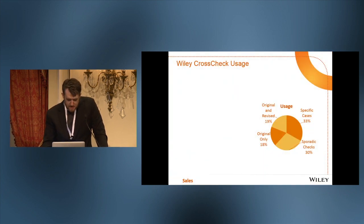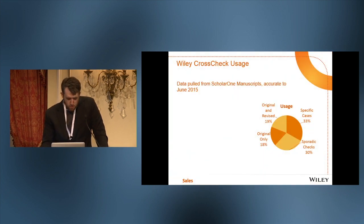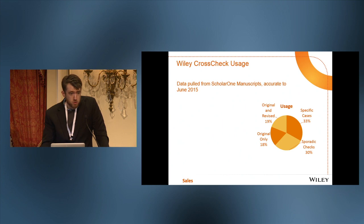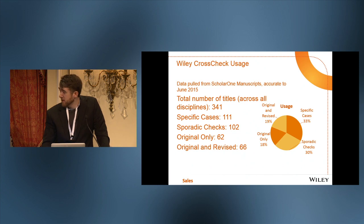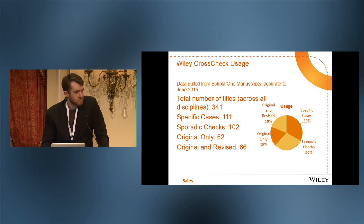I should note that all this data is pulled from our journals that use ScholarOne Manuscripts. Wiley uses a number of platforms — pretty much all of the EEOs, Editorial Manager, eJournal Press — but we most widely use ScholarOne. So what you're seeing here is sort of a slice of a slice, but it should be pretty representative.